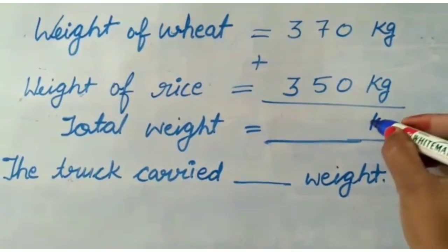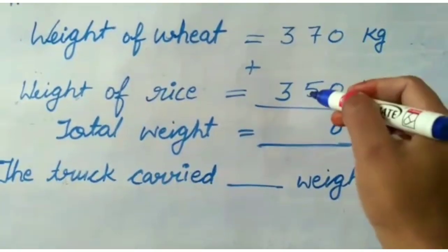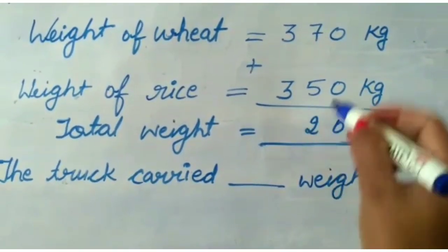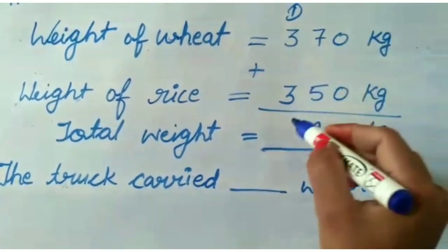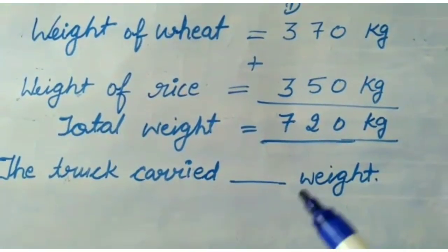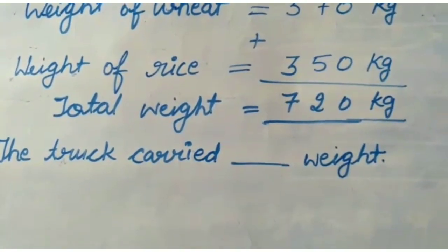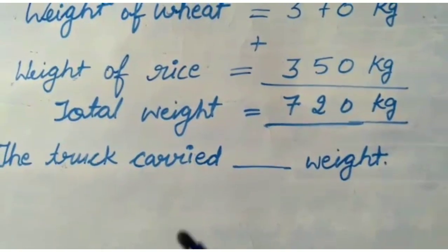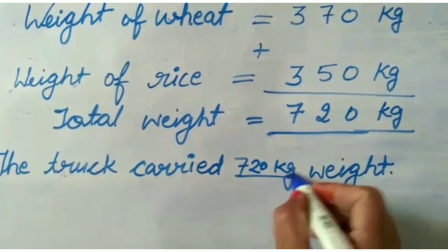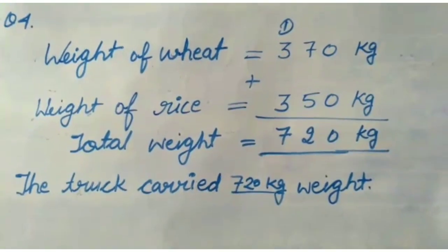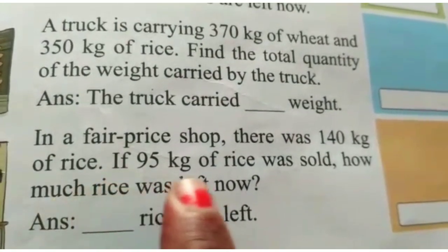पहले आपको question का given case write करेंगे। Now add: 0 + 0 = 0, 7 + 5 = 12, write 2 carry 1, 3 + 3 = 6 + 1 carry = 7. So total weight is 720 kg. The truck carried 720 kg weight. I think you understand.